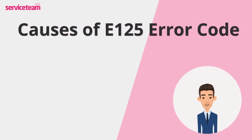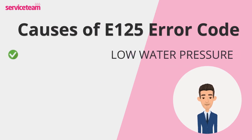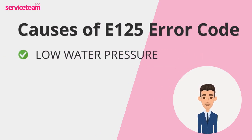Let's take a closer look at what might be causing the E125 error on your Baxi boiler. Having low water pressure is one reason for the E125 Baxi fault. When the boiler's water pressure drops below the recommended range, usually 1.0 to 2.0 bar, it struggles to circulate water properly, triggering the error.